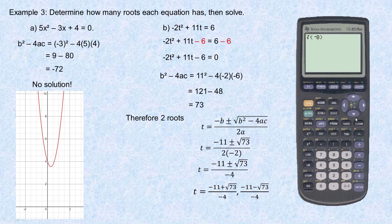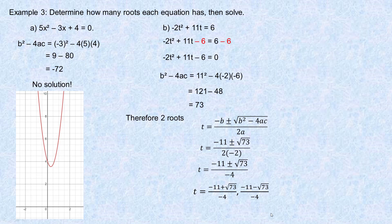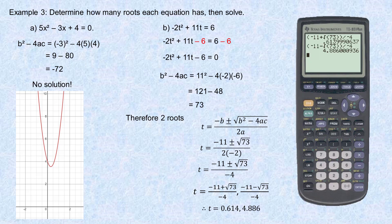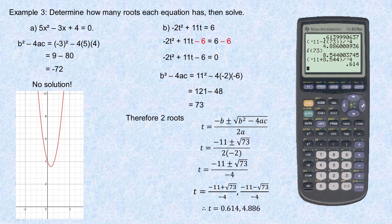Let's bring the calculator back. We go negative 11 plus the square root of 73, close the bracket, divided by negative 4 — there's one answer. Then with the subtraction, there's the second root. The square root of 73 is about 8.544. So negative 11 plus 8.544 divided by negative 4 gives 0.614, and negative 11 minus 8.544 divided by negative 4 gives 4.866. Those are the two roots.